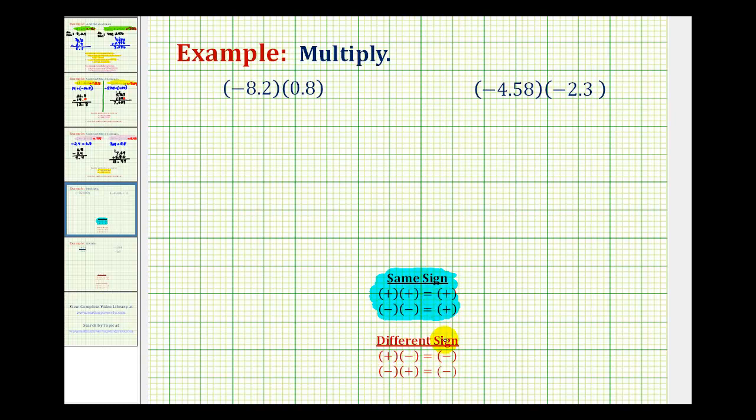If you multiply two numbers with different signs, the product is always negative. Positive times a negative is negative, and a negative times a positive is negative. We have a negative times a positive, so this product will be negative.